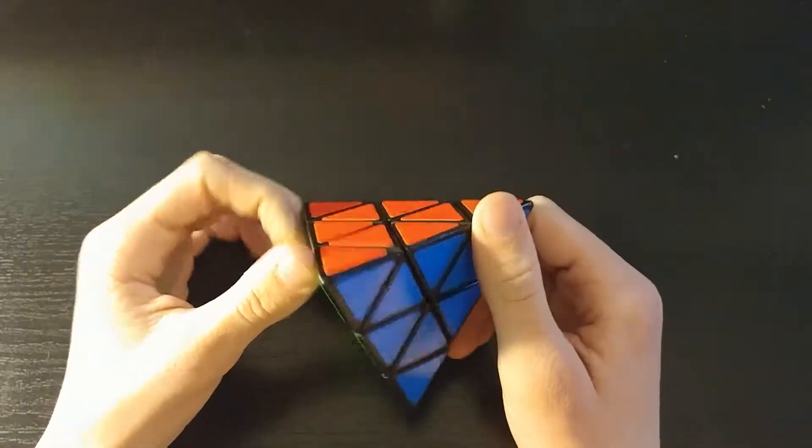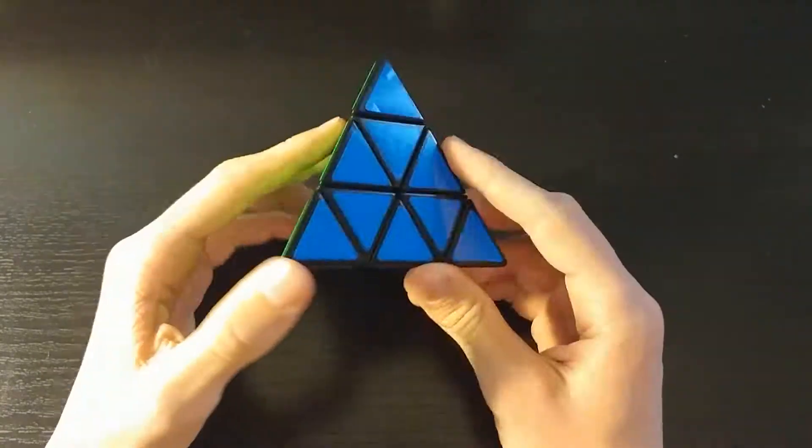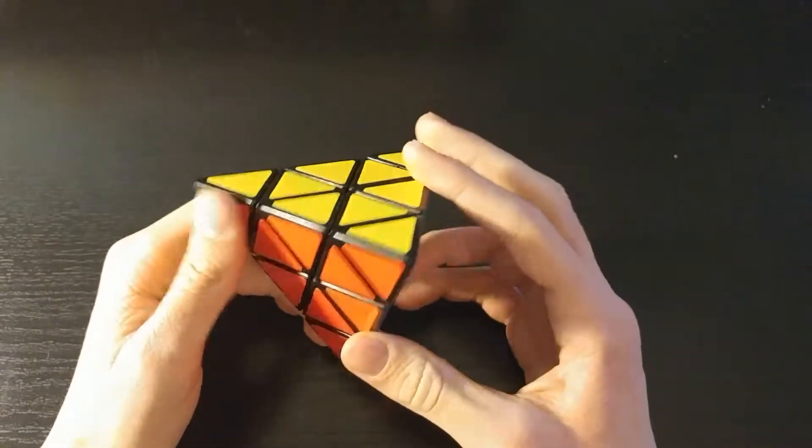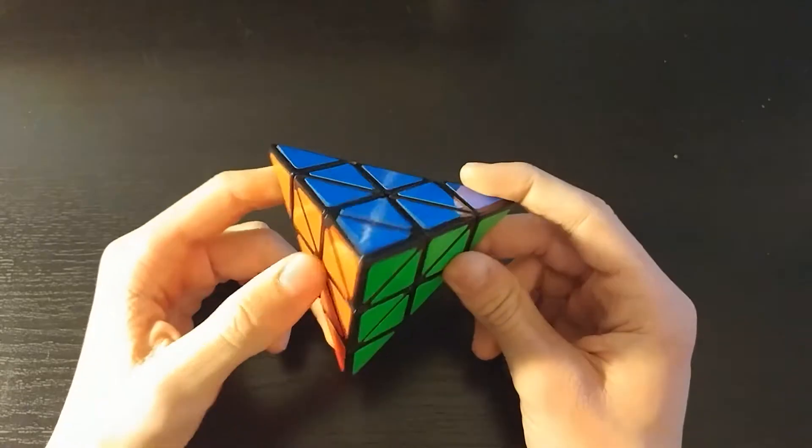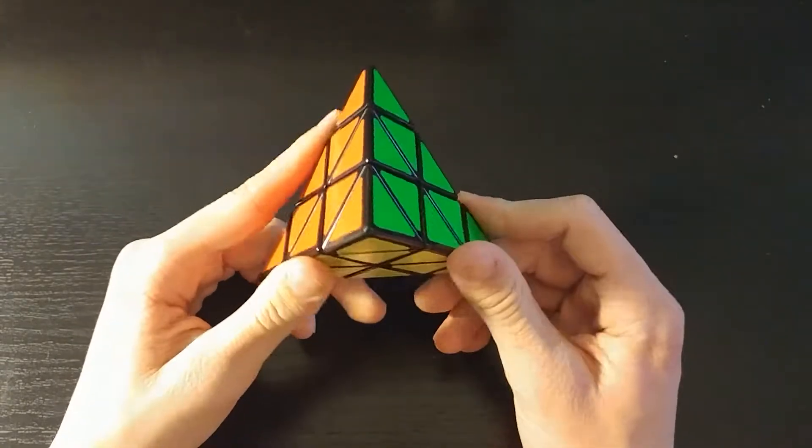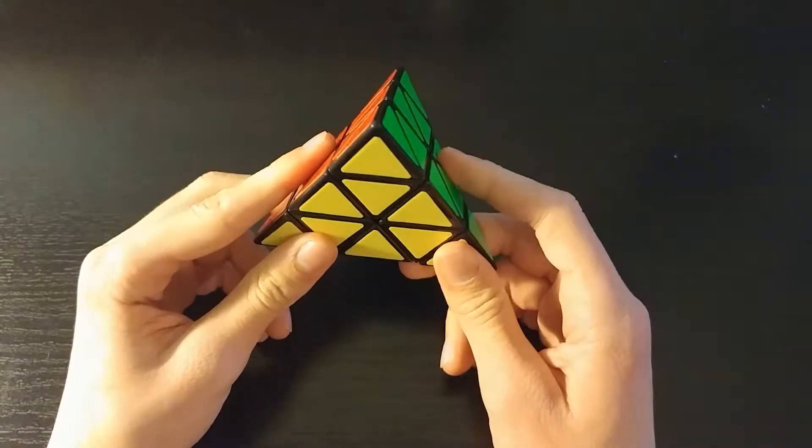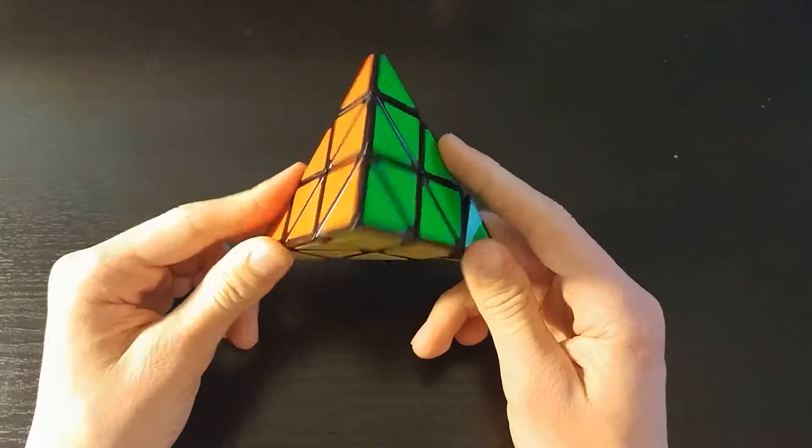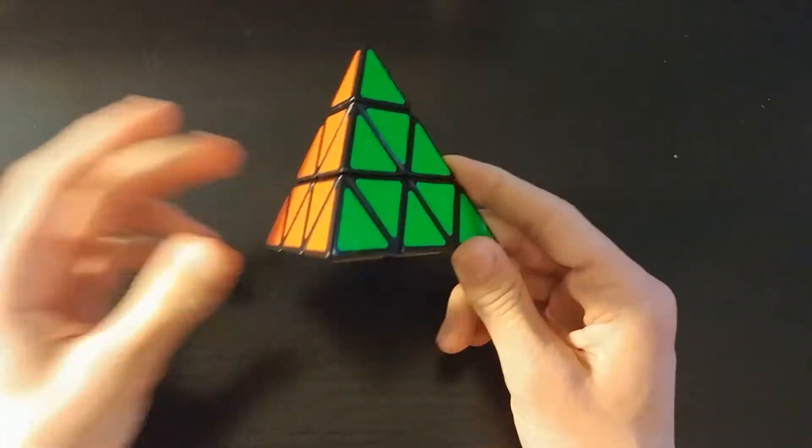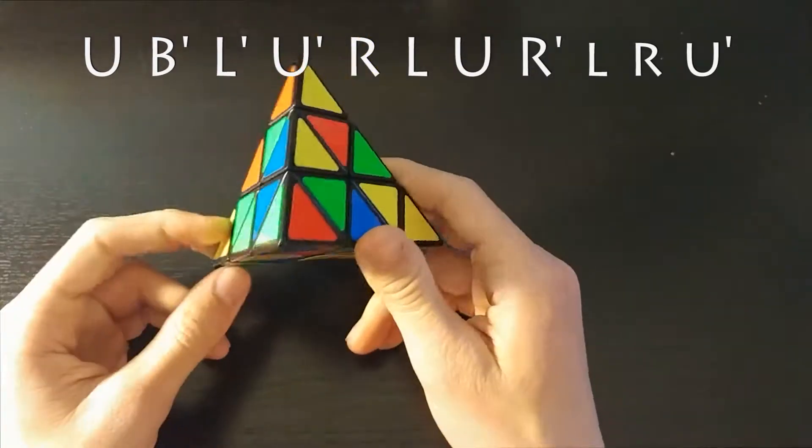Now that your Pyraminx is solved, I'm going to go through one example solve, but I'm going to use some slightly more moderate intermediate techniques that will help you get your times faster. So if you're not looking to get really fast, you can be done, but if you are looking to get pretty fast, then you can watch this next example solve as well and learn some tricks along with what you've learned. I'm going to be using this same scramble again, but we're going to use something a bit different.